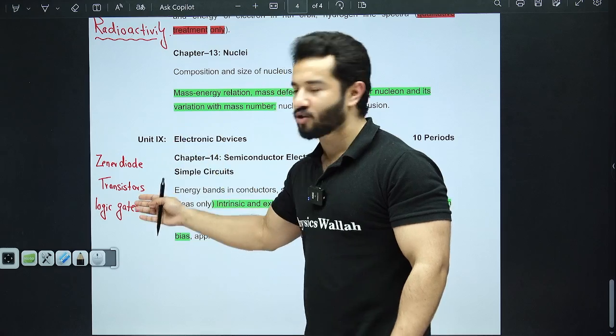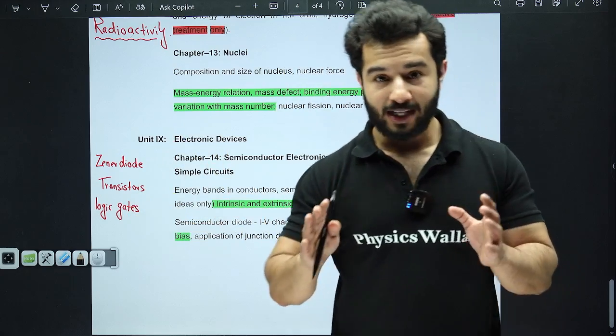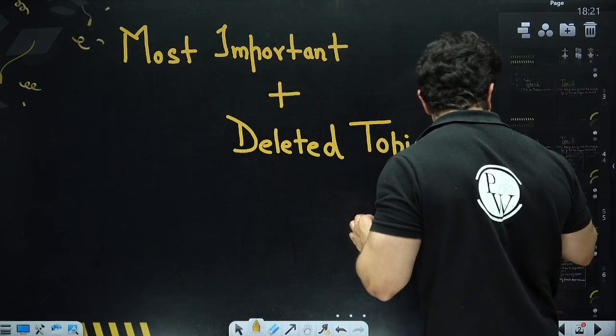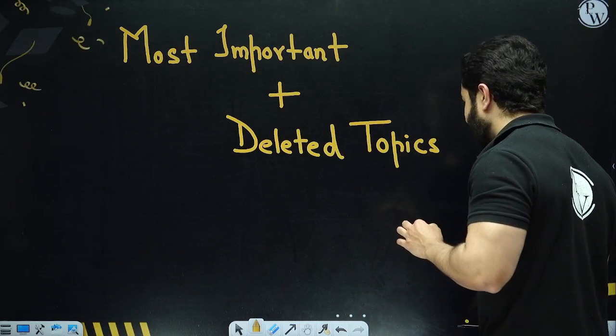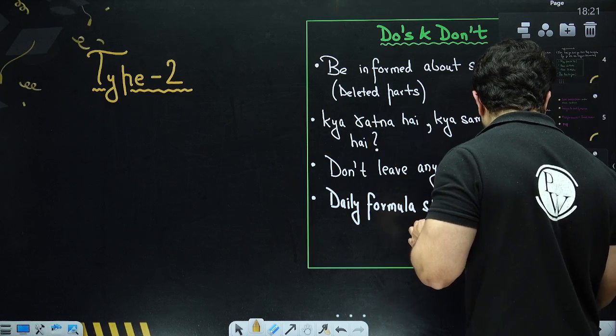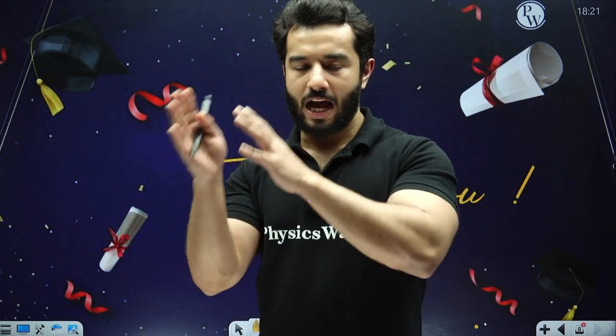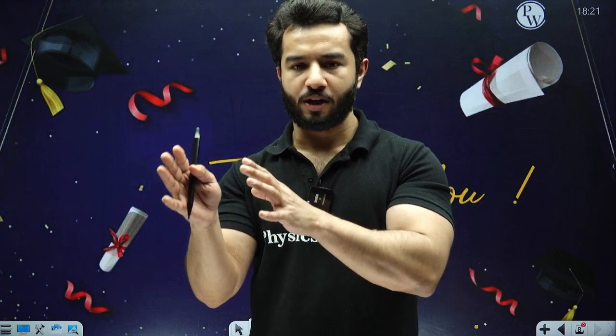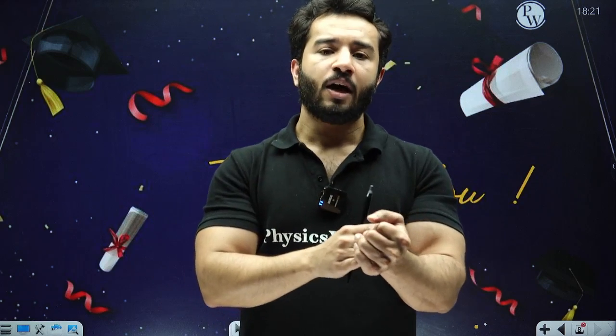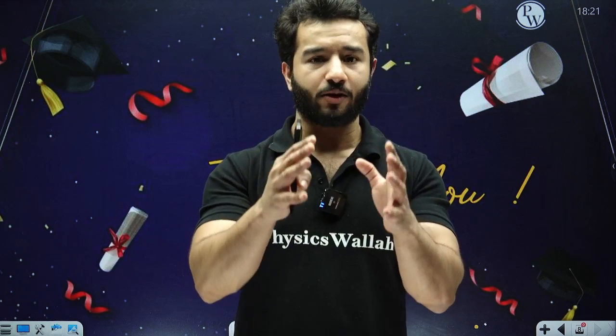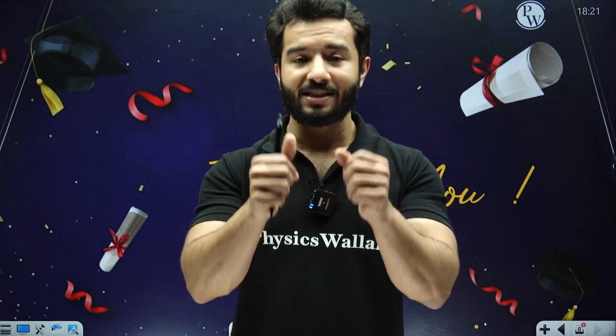Zener diode has been deleted, transistors has been deleted, and so is logic gates. So hopefully in this short session I have tried to explain you both what is actually important and what is deleted. Both of the things have been explained by me. Please, if you want to have this sheet, let me know. I'll communicate with all of you in the comment section. Hopefully your preparations are going in the right direction. If you are facing any problem, if you want me to do anything for you, please write down in the comment section. All the very best. Thank you so much, bye bye.